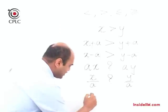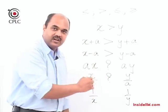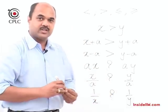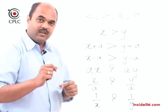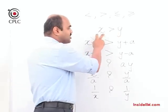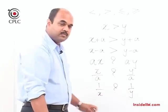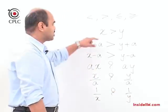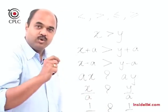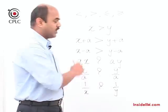Going back to x greater than y: if I simply take the reciprocal of x and y, can I say 1/x will definitely be less than 1/y? Here also I cannot generalize — it depends on the sign of x and y. When x is greater than y, it is possible that x is positive and y is negative, in which case 1/x will be positive and 1/y will be negative, so 1/x remains greater than 1/y. Don't miss out this possibility where x is positive and y is negative.